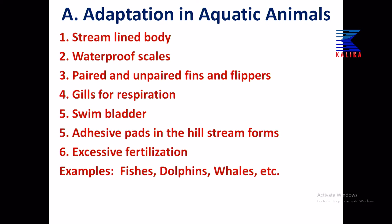Let's talk about adaptation in aquatic animals. They have a streamlined body — shaped like a boat or an aeroplane, pointed at both ends — so they can minimize water resistance while swimming. They have waterproof scales covering the body, which prevent decaying. They have paired and unpaired fins and flippers — fins and flippers are both meant for swimming.